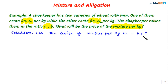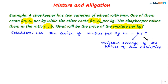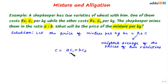Let the price of mixture per kg be rupees C. This price C will be the weighted average of the prices of the two varieties of wheat. The weighted average C is given by: C = (a × C1 + b × C2) / (a + b). We can call this our first formula.